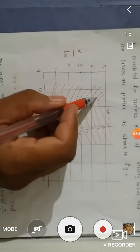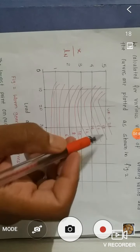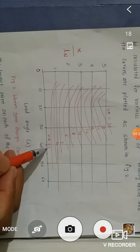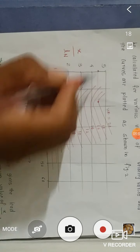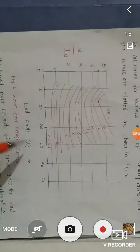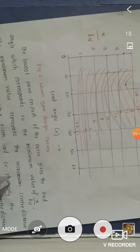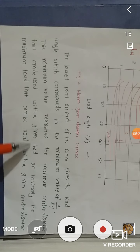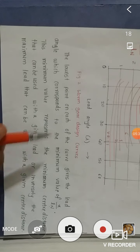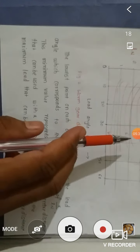The graph shows curves for various velocity ratios such as 20, 18, and so on down to 1. The lowest point on each curve gives the lead angle corresponding to the minimum value of X/LN for that velocity ratio. For example, for a velocity ratio of 20, we can read off the corresponding minimum value of X/LN. This minimum value represents the minimum center distance that can be used with a given lead, or inversely, the maximum lead that can be used with a given center distance. In this way, we can determine the center distance using the graph.